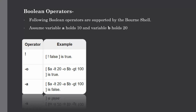Next is boolean operators. You may already know boolean operators from other programming languages. Similarly for shell scripting, here are some operators supported by the Bourne shell. We consider variables a and b holding 10 and 20. The first operator is logical negation, which inverts a true condition to false and vice versa, denoted by the exclamation symbol. The next is hyphen-o, the OR operator: if one of the operands is true, the condition becomes true. The last is hyphen-a, the AND operator: both operands must be true for the condition to be true.